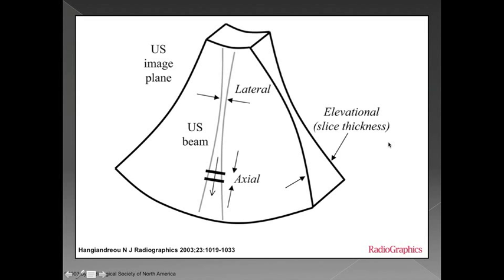And then your elevational or your slice thickness is pretty much fixed. We talked about focus on the last slide, we were actually talking about focus just in the two dimensions that are the image. But if we think about the third dimension, which is the slice thickness, most of our transducers right now actually have a fixed focal zone. And so the slice thickness is actually going to change depending on the depth of the image that you're looking at.